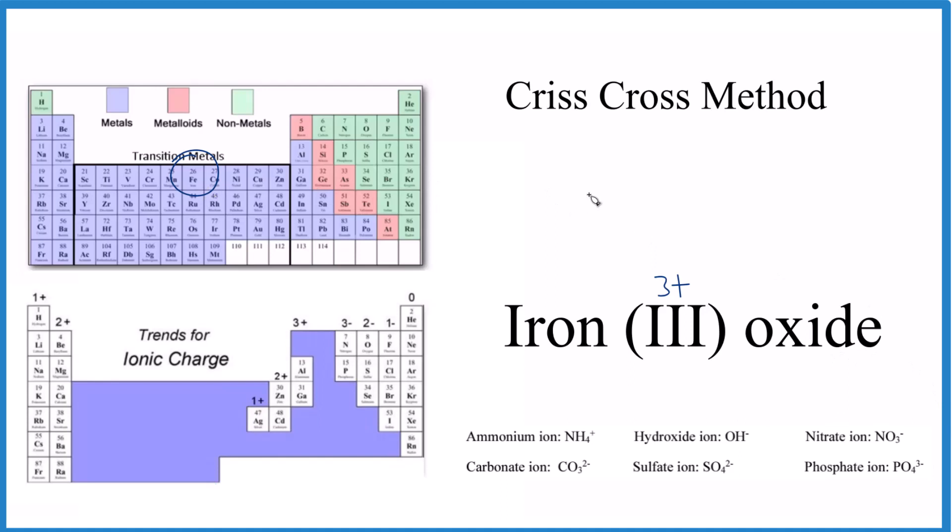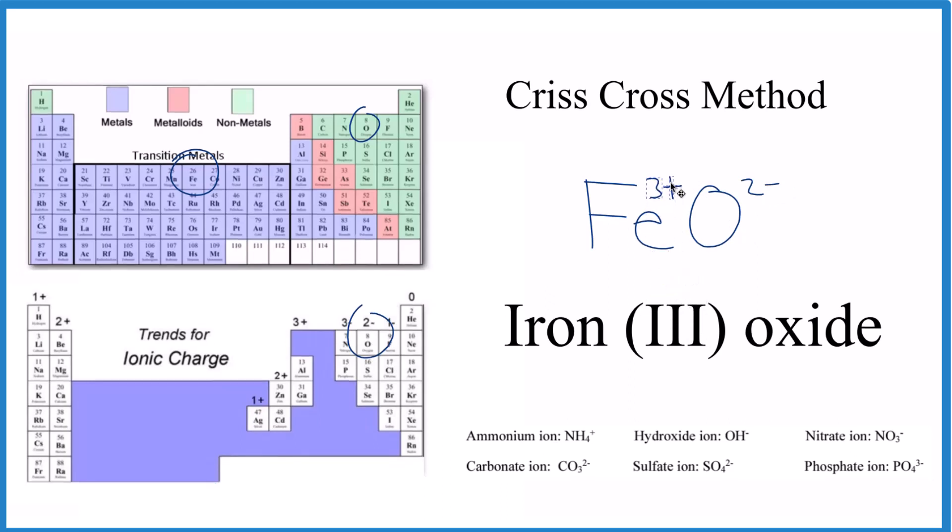Iron, that's Fe. Oxide, that's from oxygen right here. That's O. That's going to be 2 minus. And we know this is 3 plus because it's called iron 3. Let's just move that up there. Now we just need to crisscross. 3 goes here. 2 goes here. And you've got the formula for iron 3 oxide. Fe2O3.